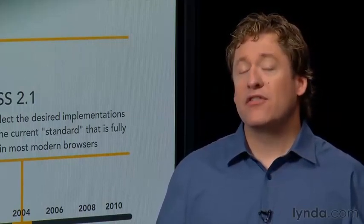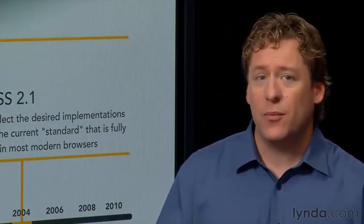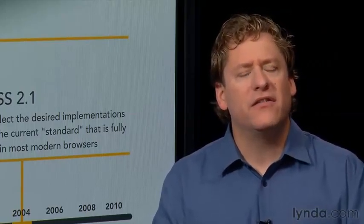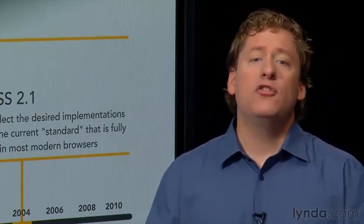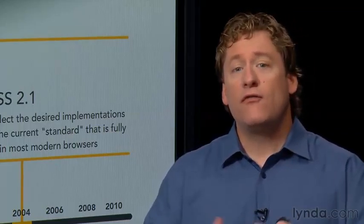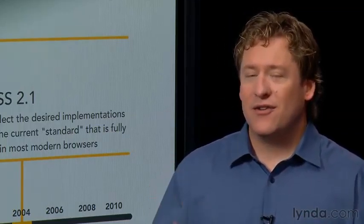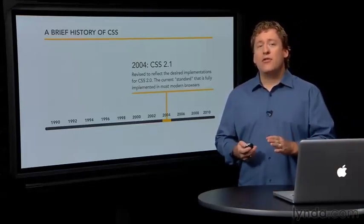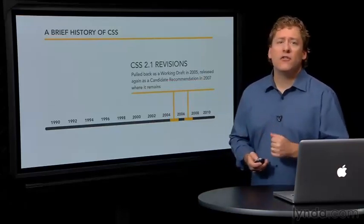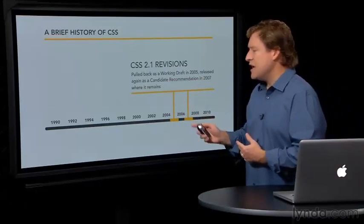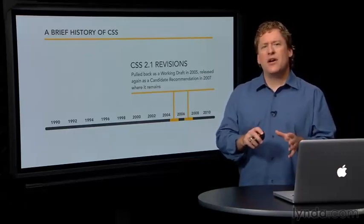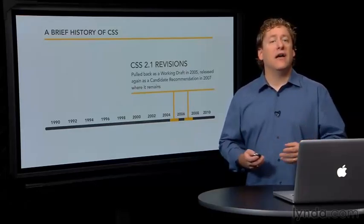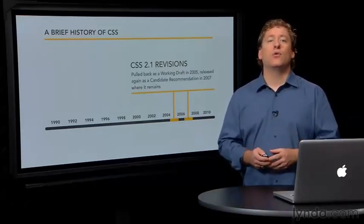Support for web standards continued to grow during the development of CSS 2.1, and browser manufacturers began to get really serious about implementing the standard. For the most part, modern browsers offer full implementation of the 2.1 standard. Now, you'll notice I said, for the most part. Because of an uneven implementation, the W3C pulled the 2.1 specification back to working draft status in 2005 to even out the bugs and make the standard a bit stricter. It was returned to candidate recommendation in 2007, where it remains as of this recording.